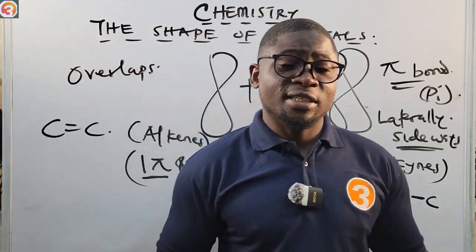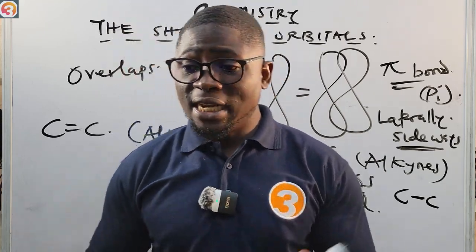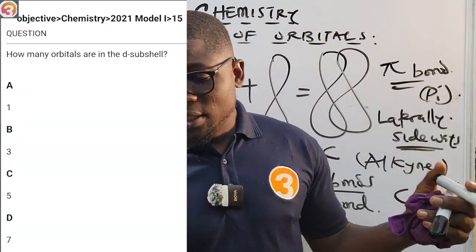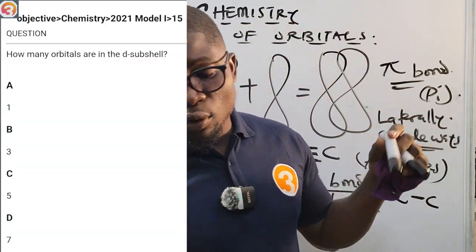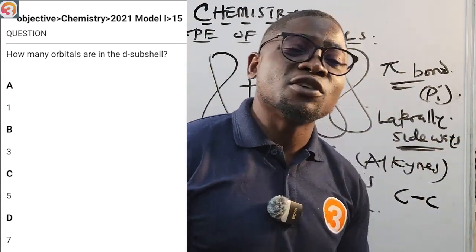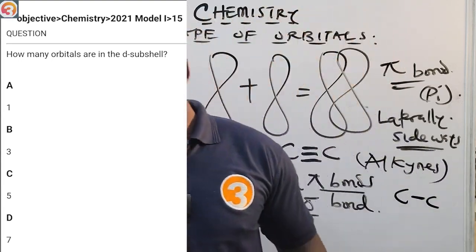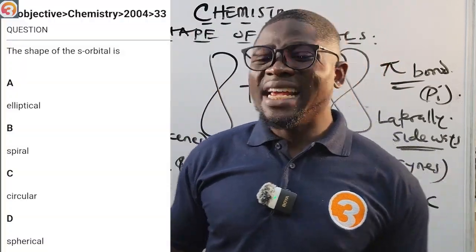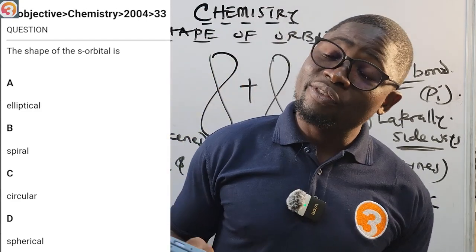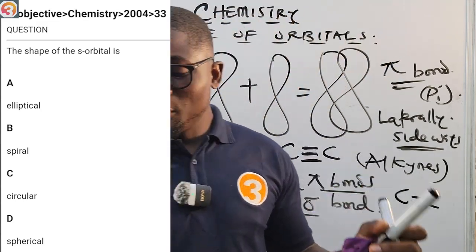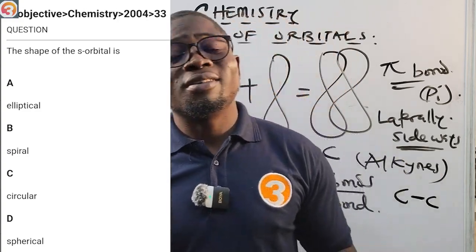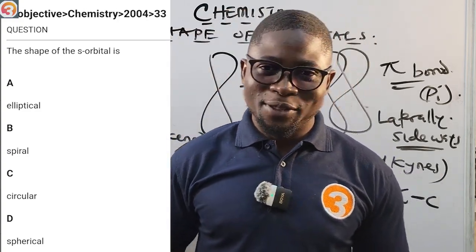Now let us quickly review the practice questions from the application. 2021 number 15: how many orbitals are in the D sub-shell? The answer is C — 5, because the D orbital has five sub-orbitals. 2004 number 33: the shape of the S orbital is — A: elliptical, B: spiral, C: circular, D: spherical. The answer is D — spherical. Download the app and start practicing your way to success. My name is Master T, your grand commander. See you in the next episode!